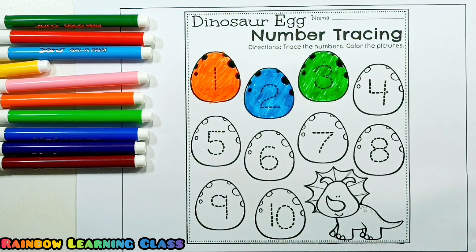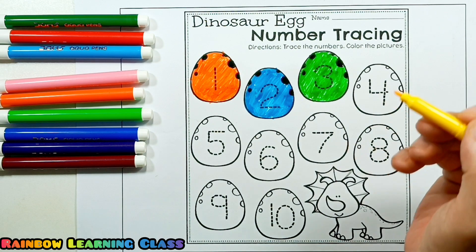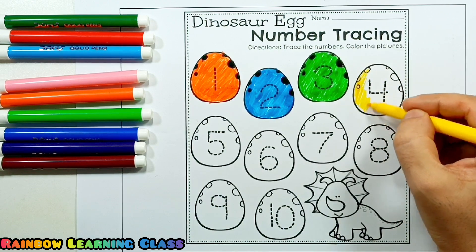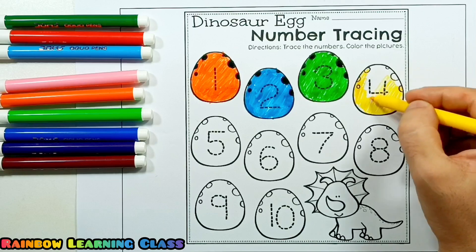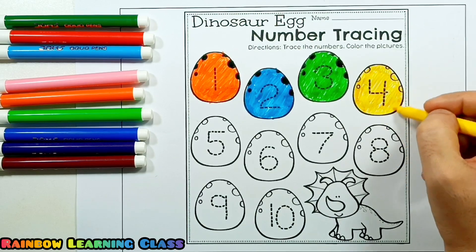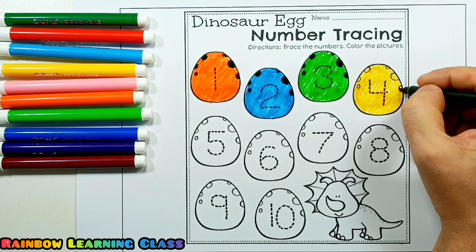Next number! Three! Four is yellow! Four! Six!